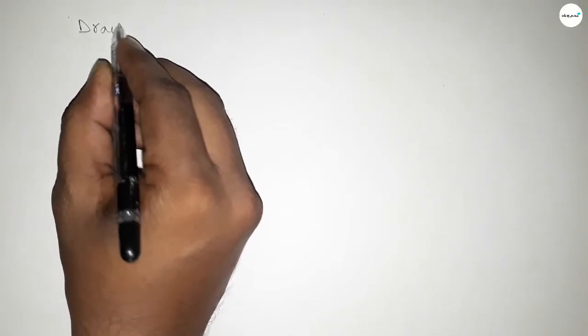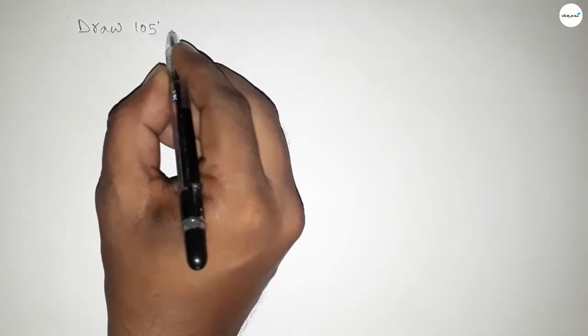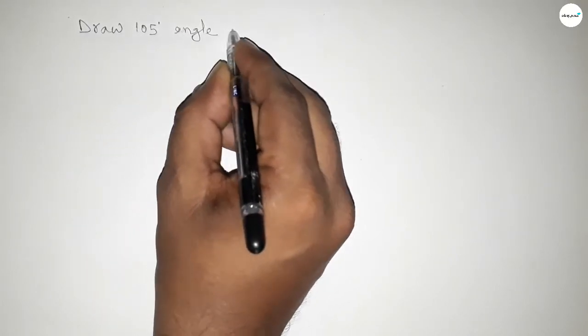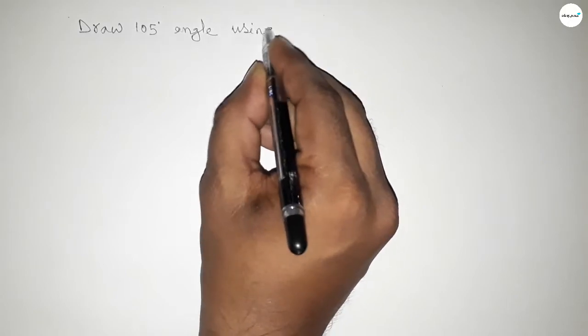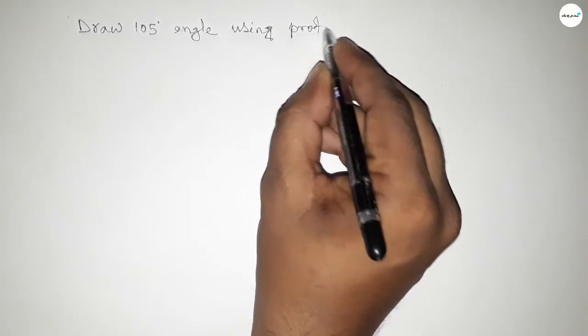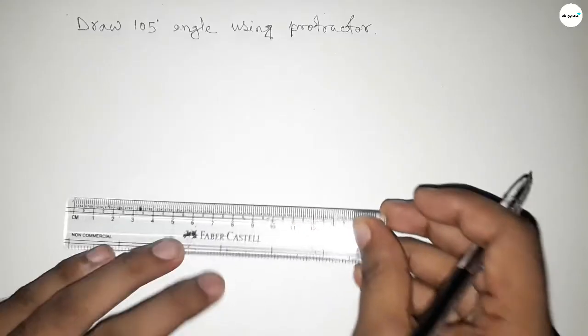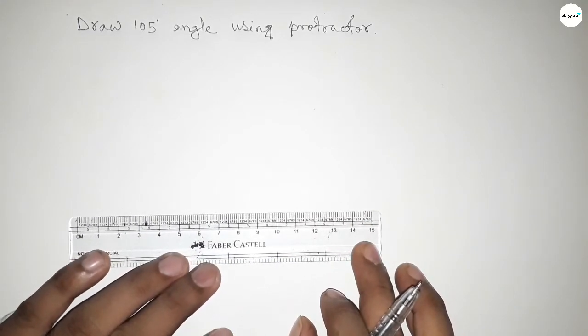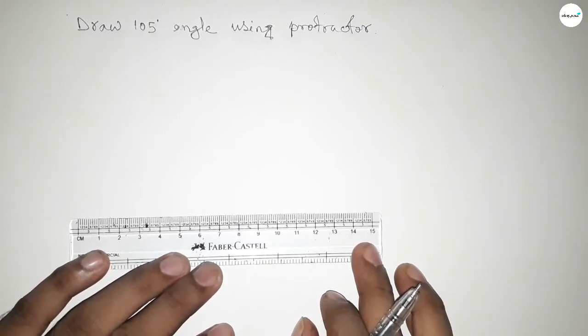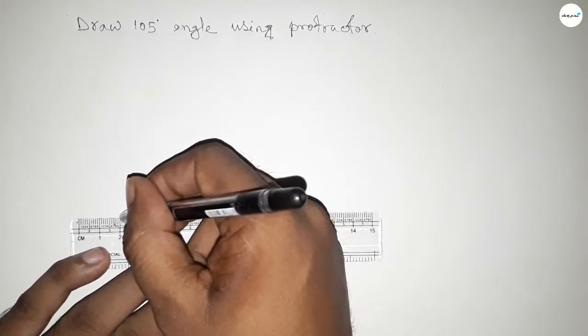Hi everyone, welcome to SSR classes. Today in this video we have to draw a 105 degree angle by using a protractor. So let's start the video. First of all, drawing here a line of any length.